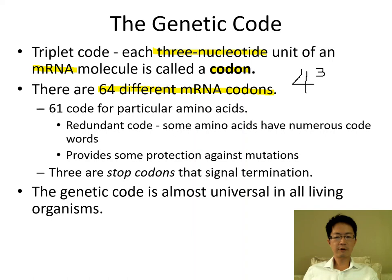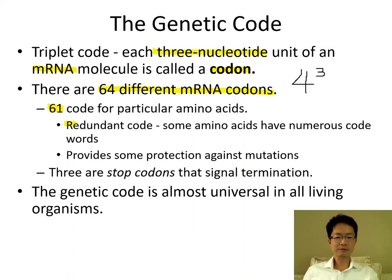It is 4 to the power of 3, therefore 64. Among the 64 possible different messenger RNA codons, we only use 61 of them to code for amino acids. In our human body, we have 20 amino acids. So if we have 61 codons coding for amino acids, that means we have a lot of redundant code. What does it mean by redundant code? It means that some amino acids have more than one code.